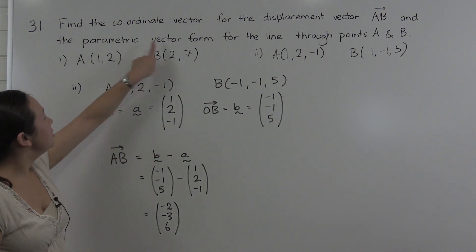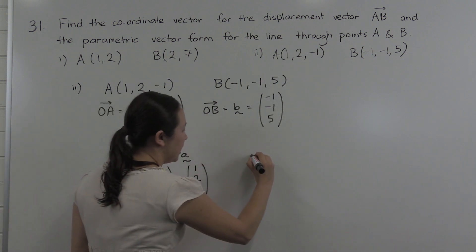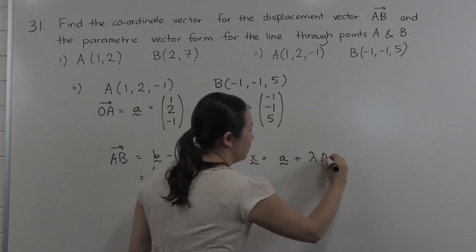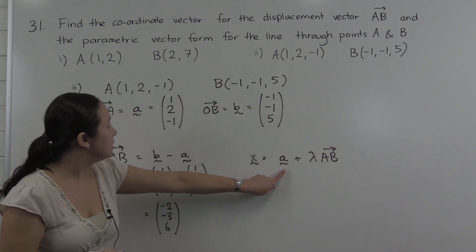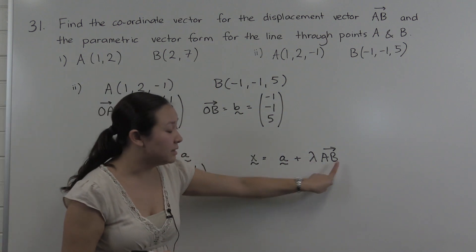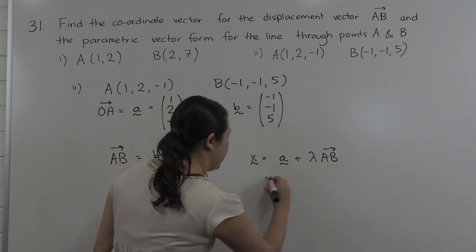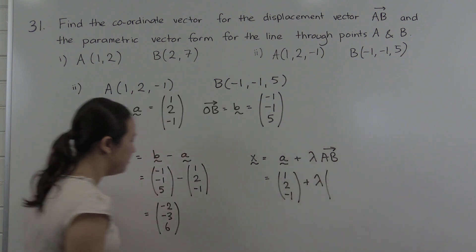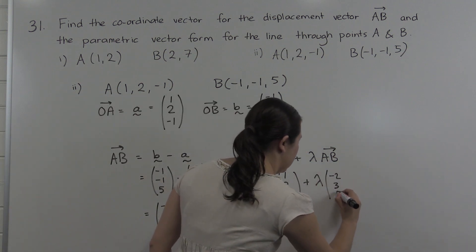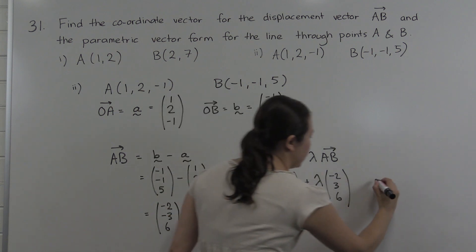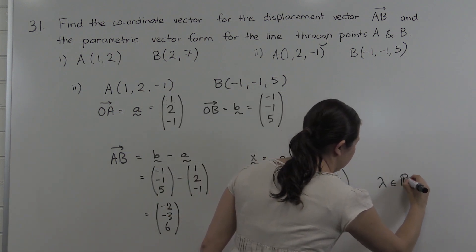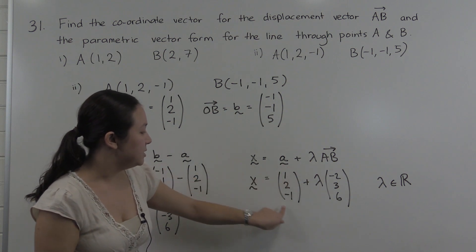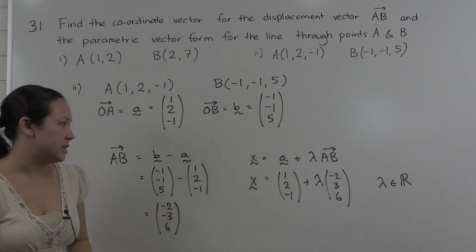Now we want the parametric vector form of the line through AB. Any point on the line through AB looks like a point on the line plus a scalar multiple of a vector parallel to the line. A is on the line, and AB is parallel to the line — in fact AB is the line. So the parametric form is: vector A, which is (1, 2, -1), plus lambda times AB, which is (-2, -3, 6). Don't forget, lambda is a real number because it's a scalar multiple.